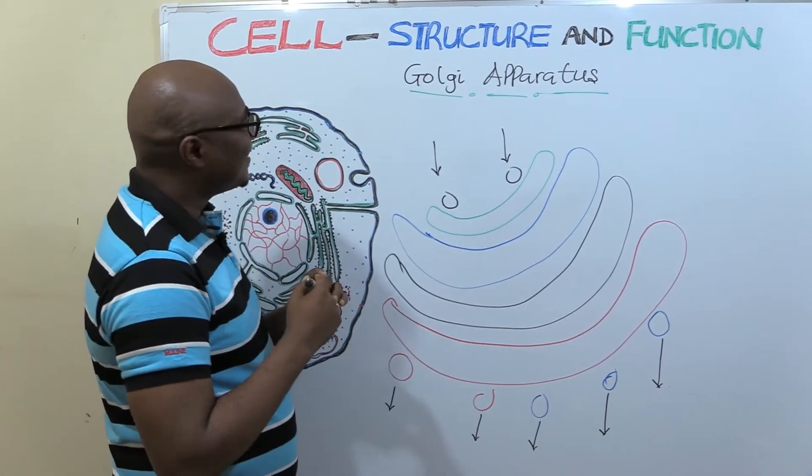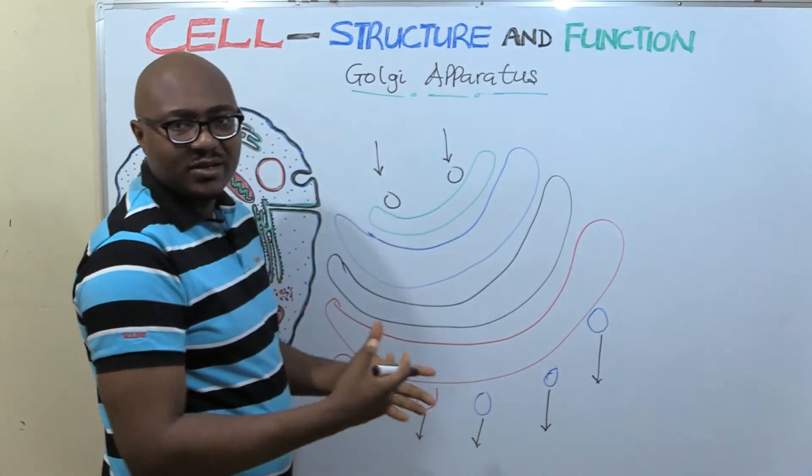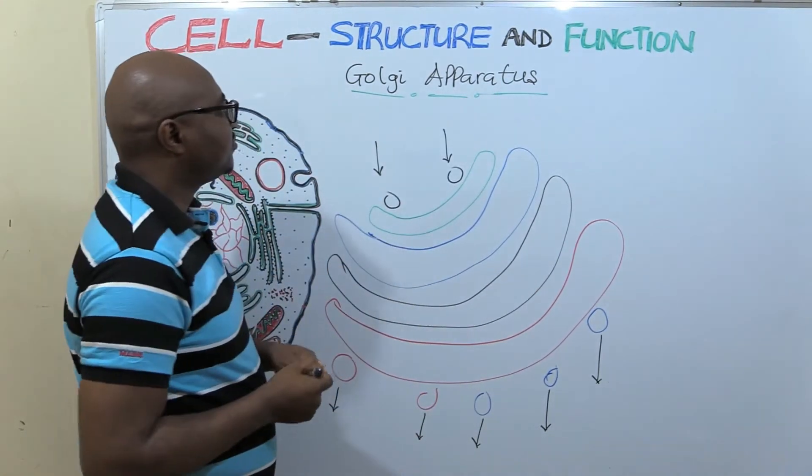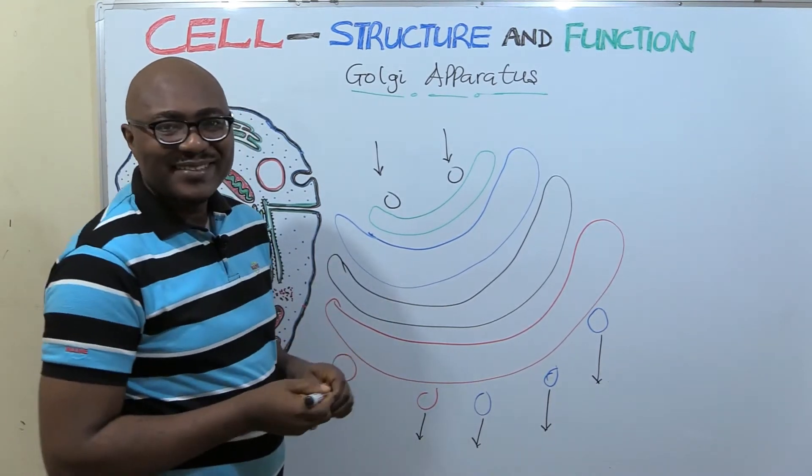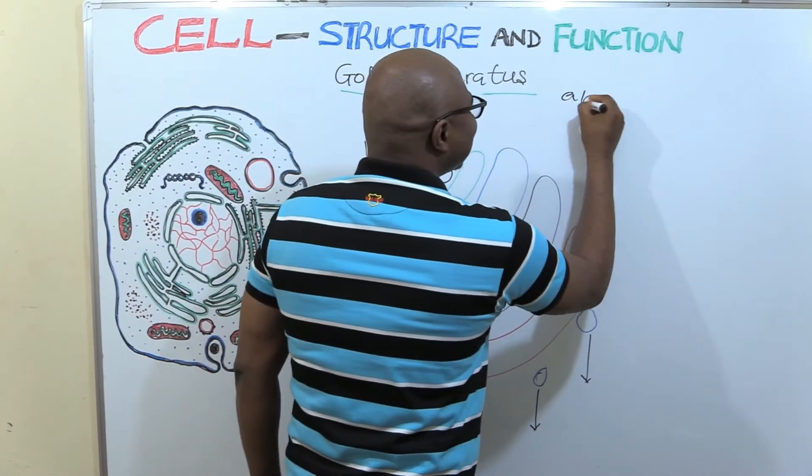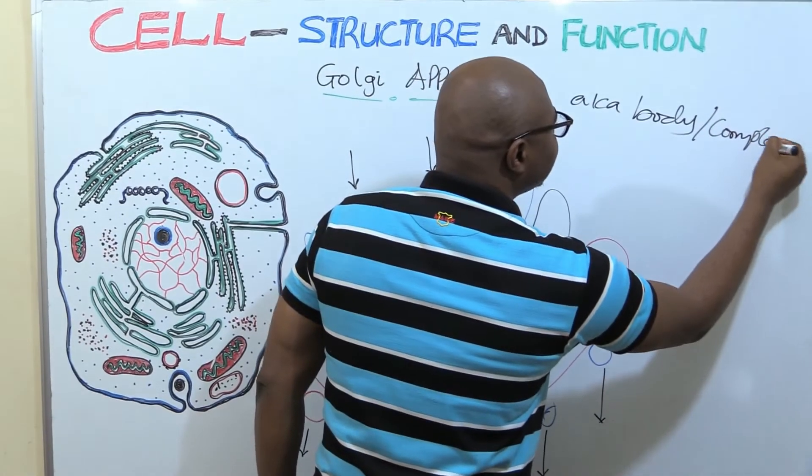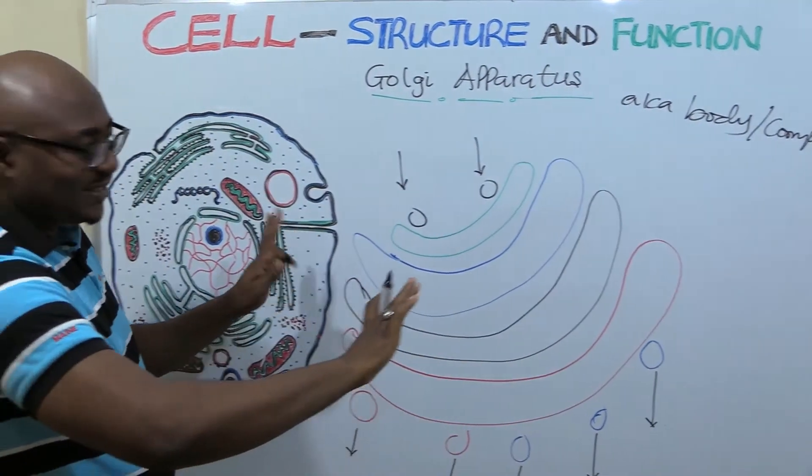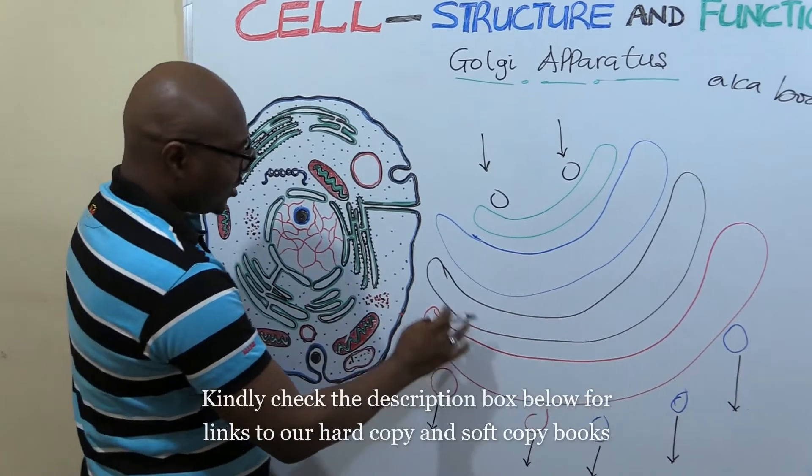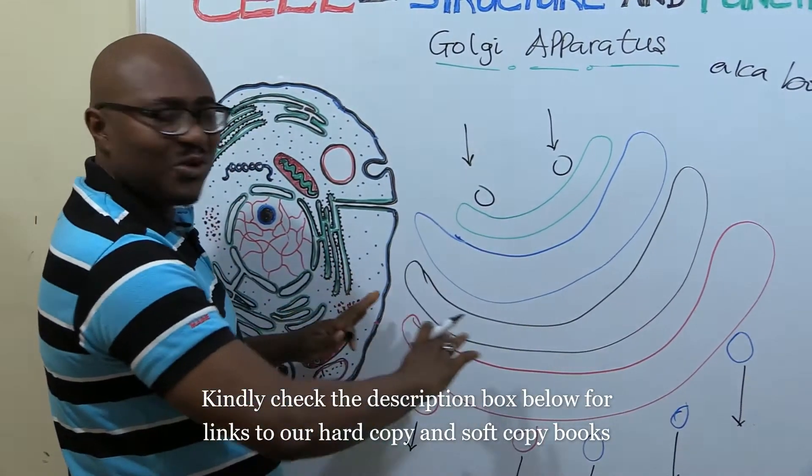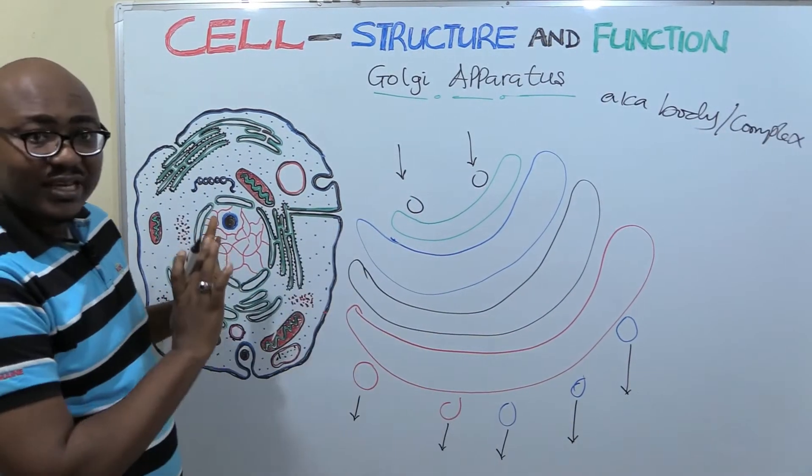So today we're going to be dealing with a very interesting cell organelle. It's called the Golgi apparatus. It's also known as Golgi body or complex. Now here is a very simplistic diagram I tried to put up. So I just tried to magnify it. It's looking like a stack of plates. So this has an elongated shape.